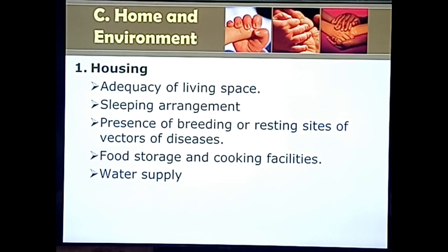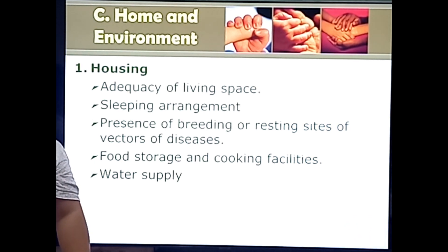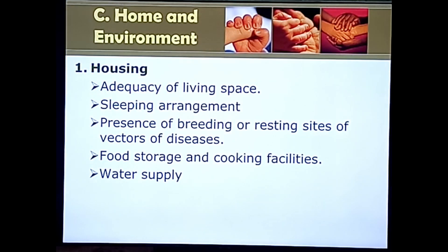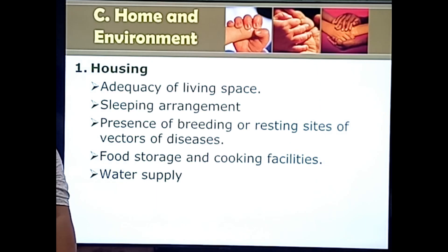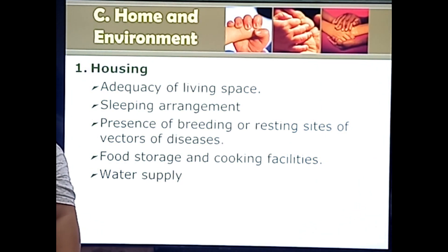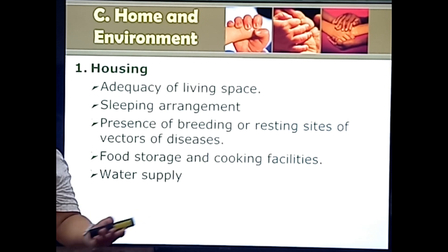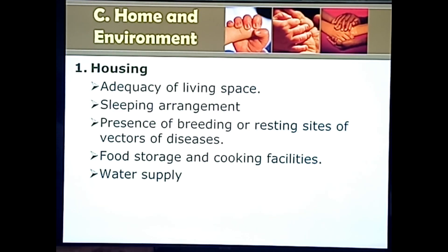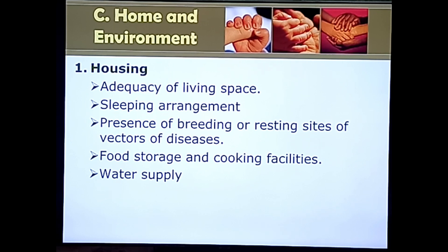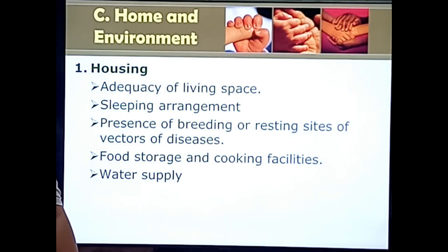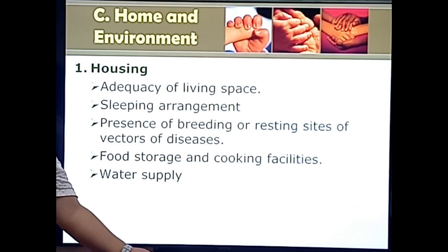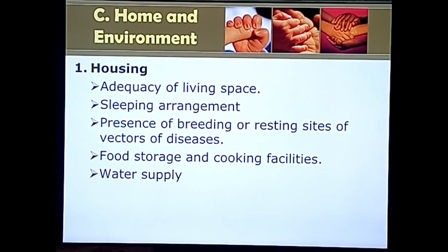Toilet facilities are also classified by level. Level 1 is non-water carriage type — toilet facilities using no water or very little water, common in rural areas. Examples include pit latrines, where a hole is dug and covered with a small structure with a hole in the floor — no water is used. Level 2 is flush type with a septic tank or septic vault, which is the most common toilet facility in the Philippines. Level 3 is connected to a sewerage system.